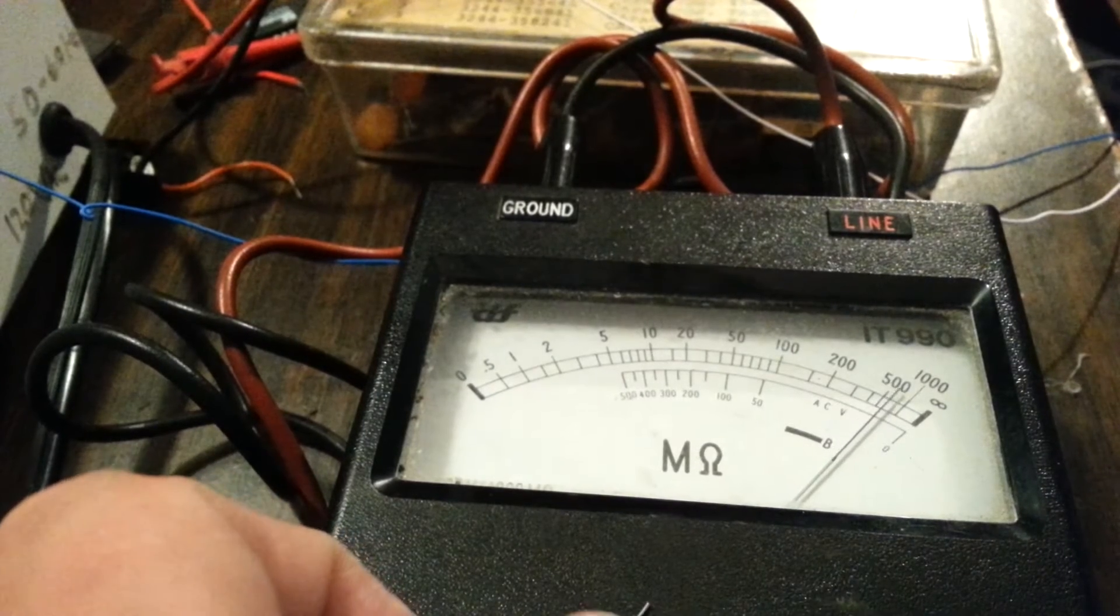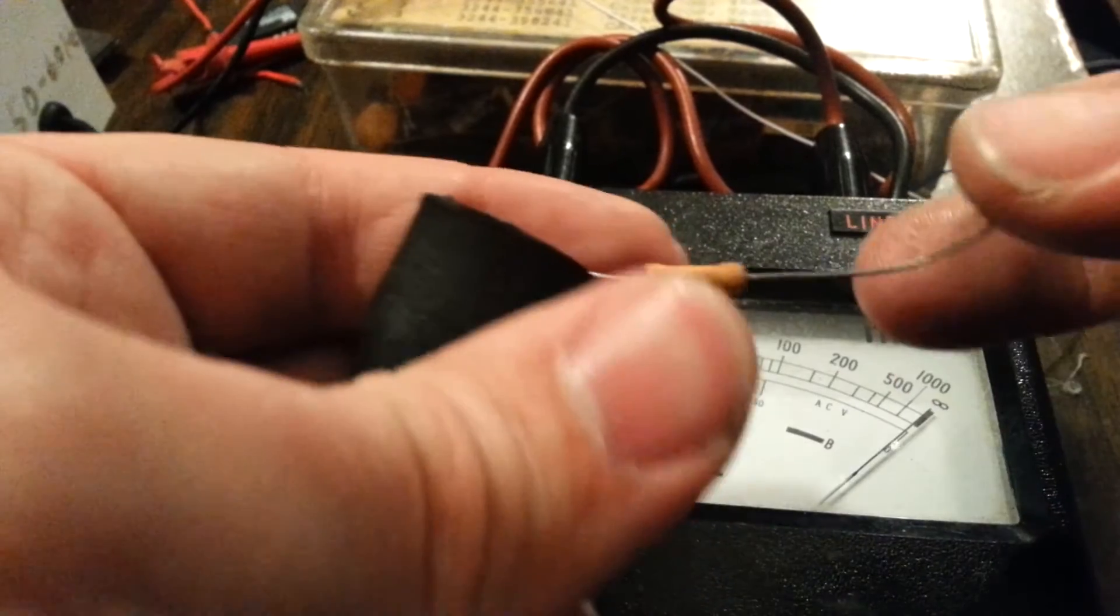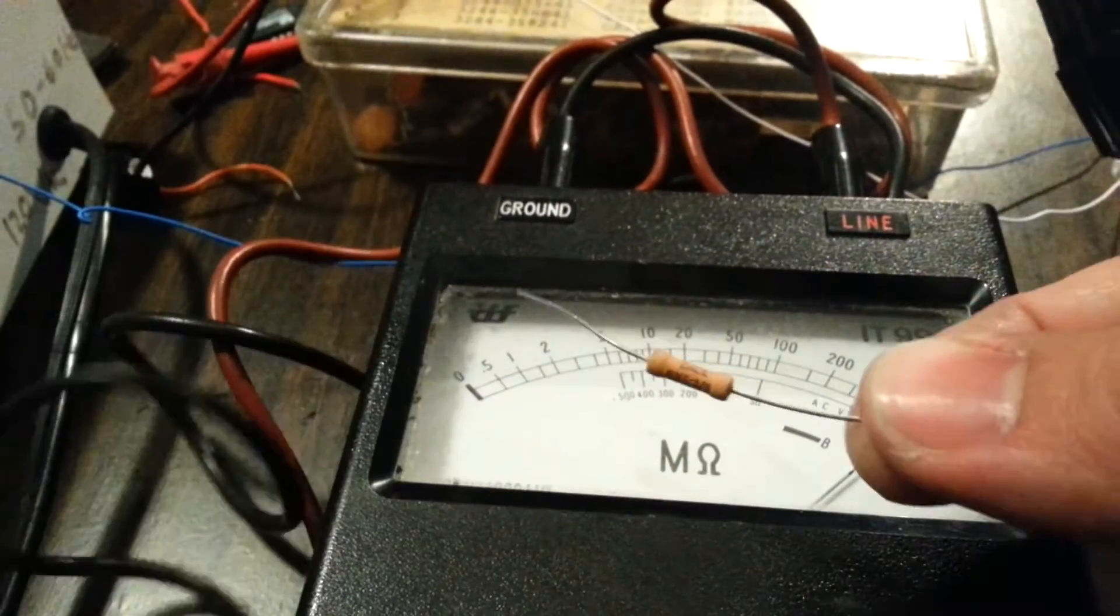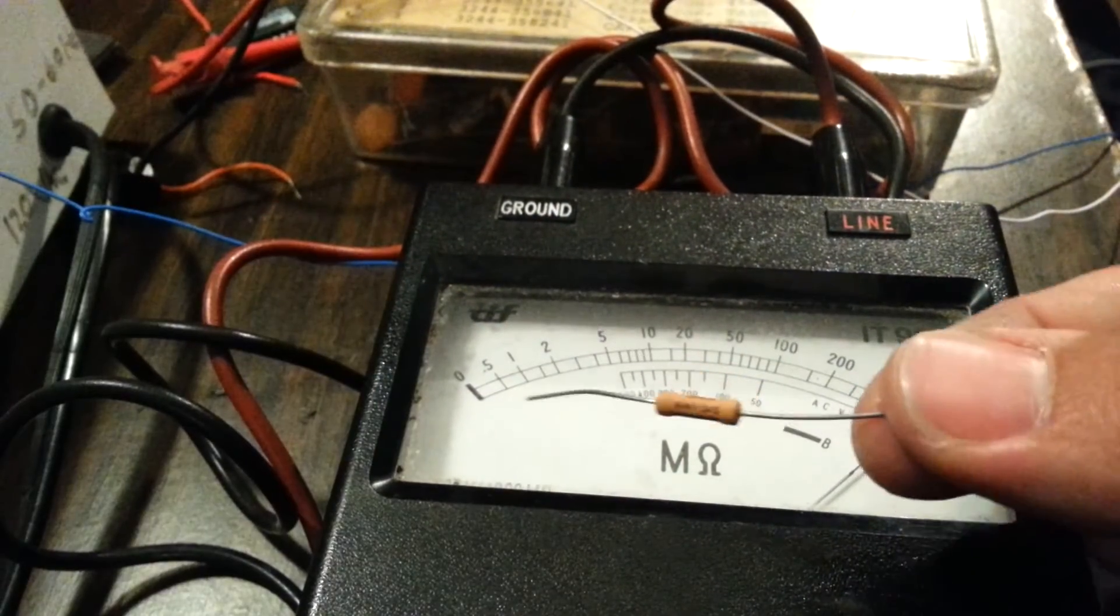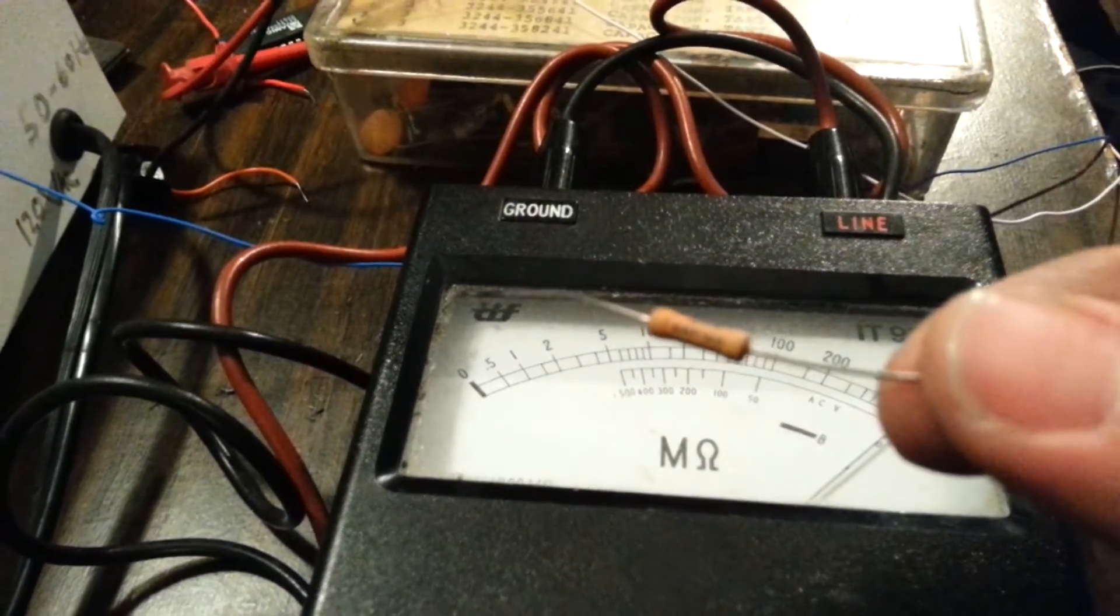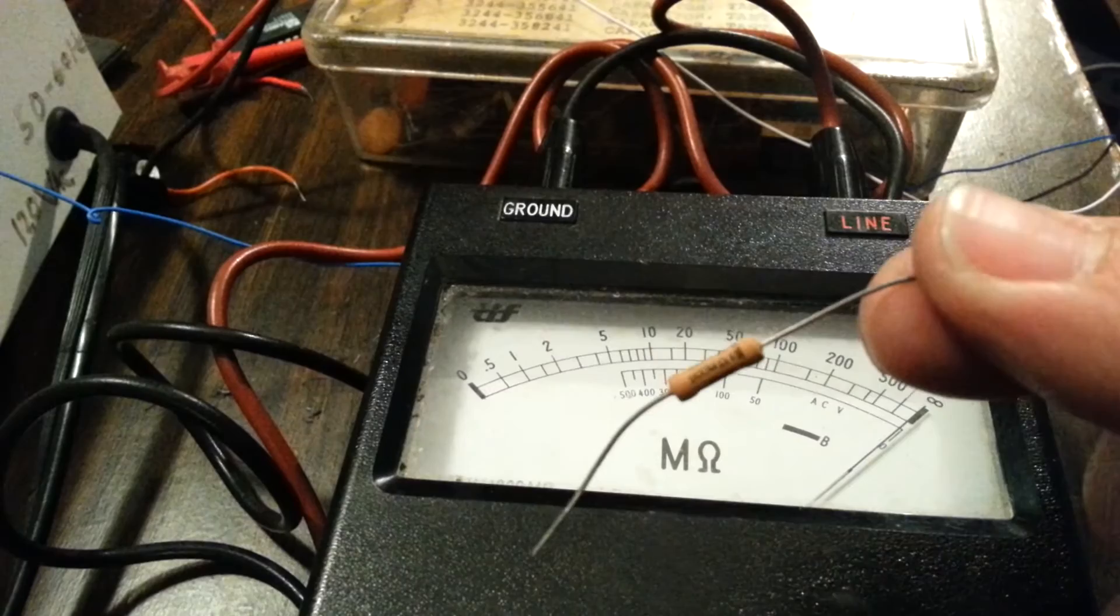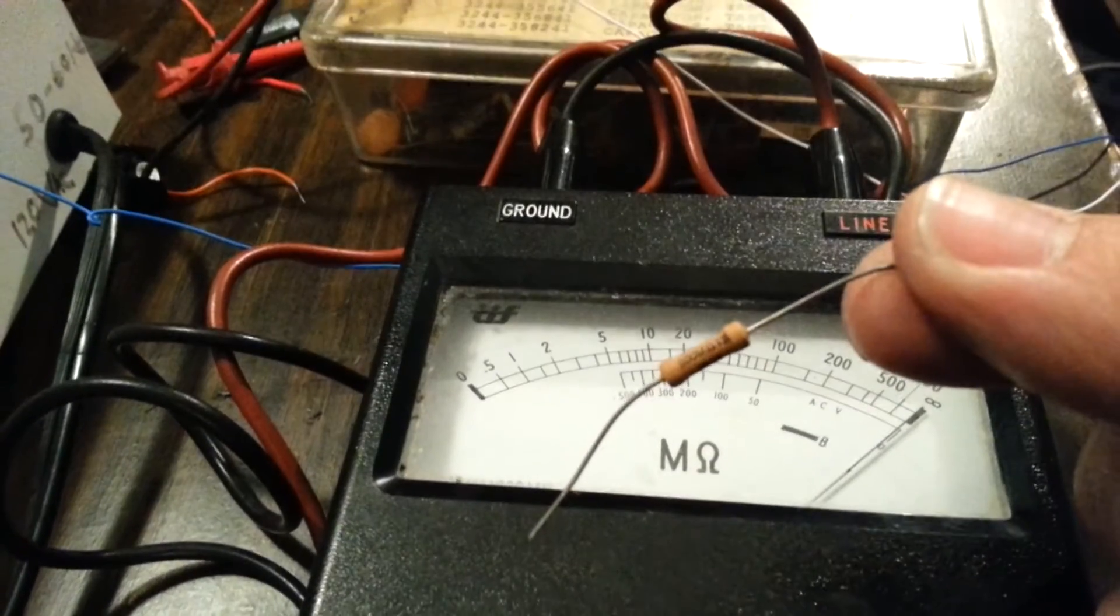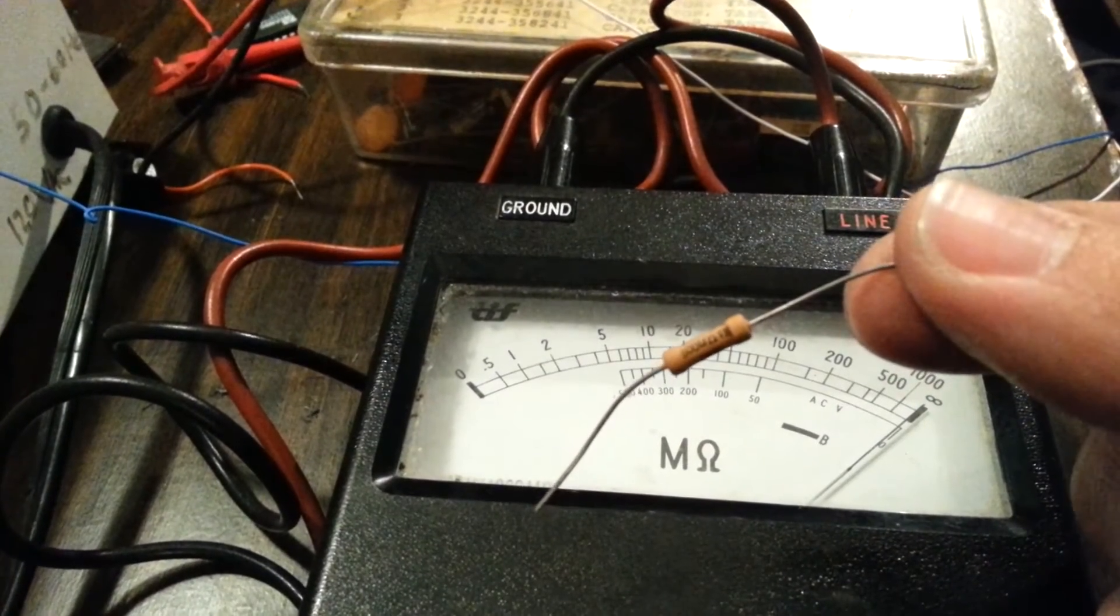This is a 500 mega ohm resistor. That's right. 500 meg. That's half a gigaohm. That's a lot of resistance.